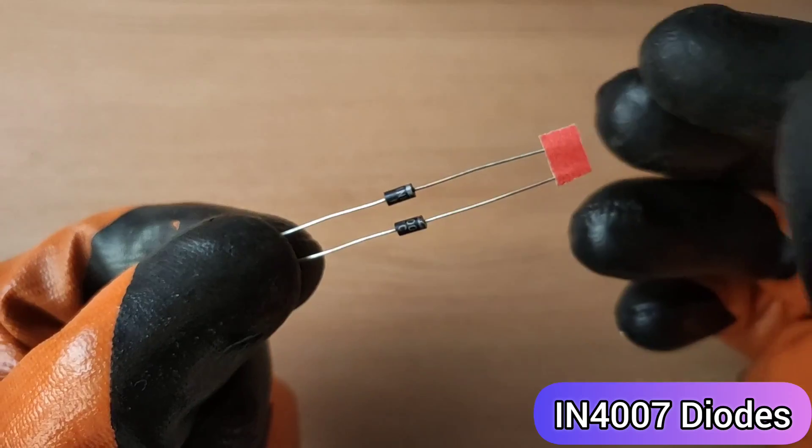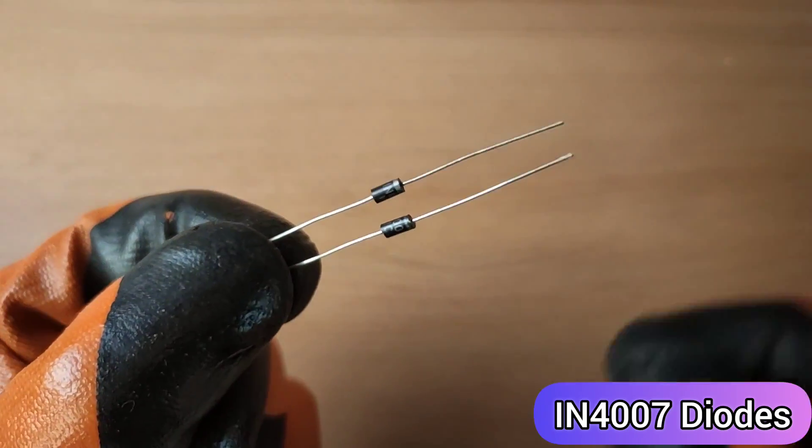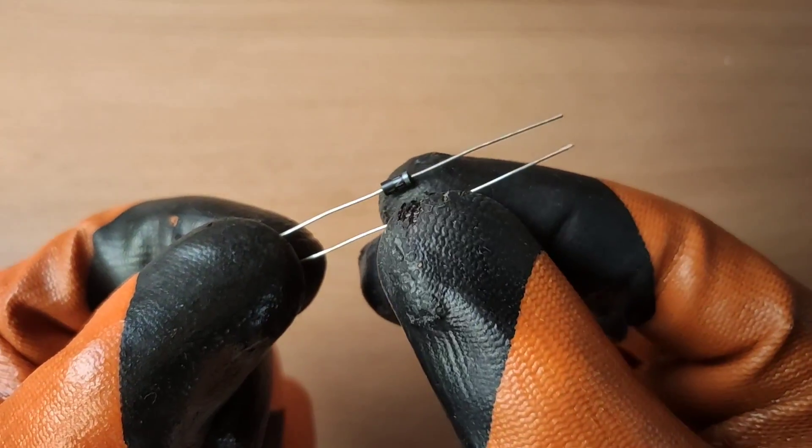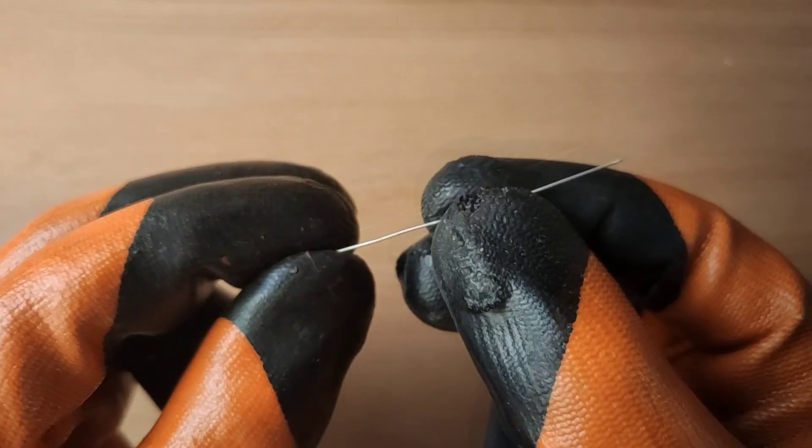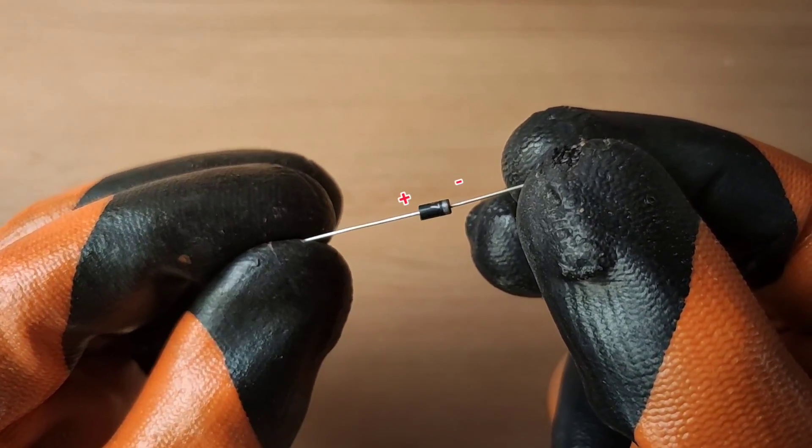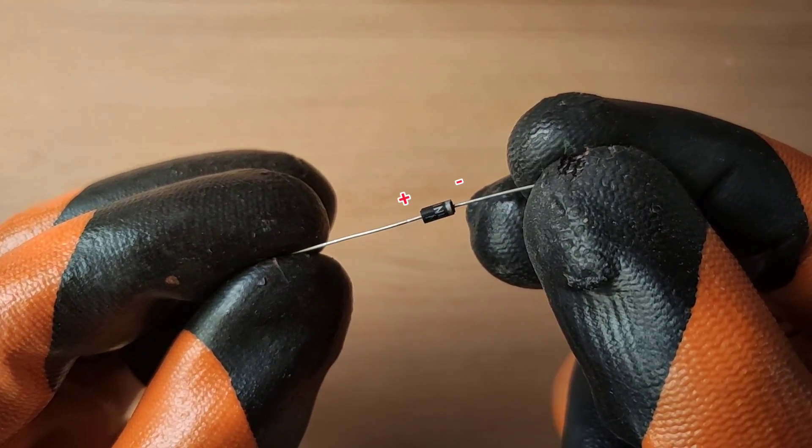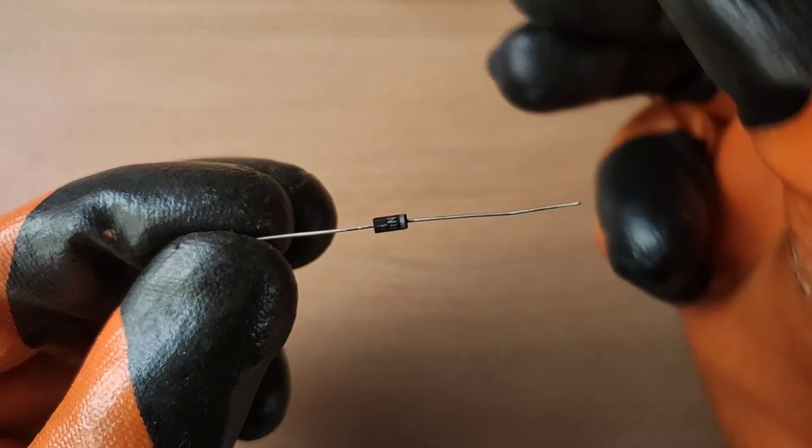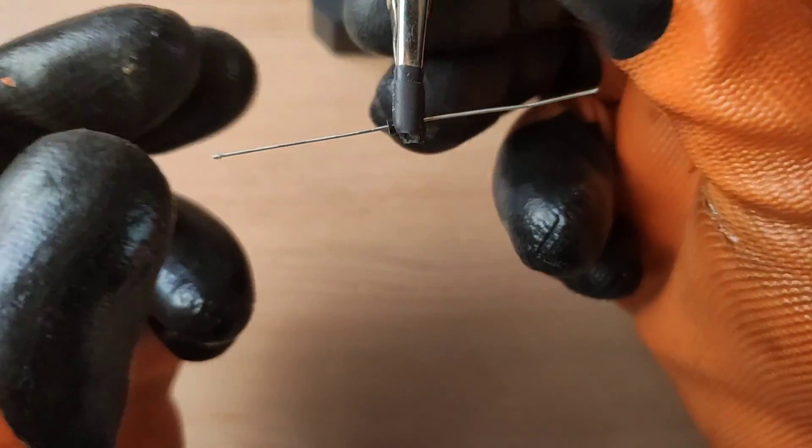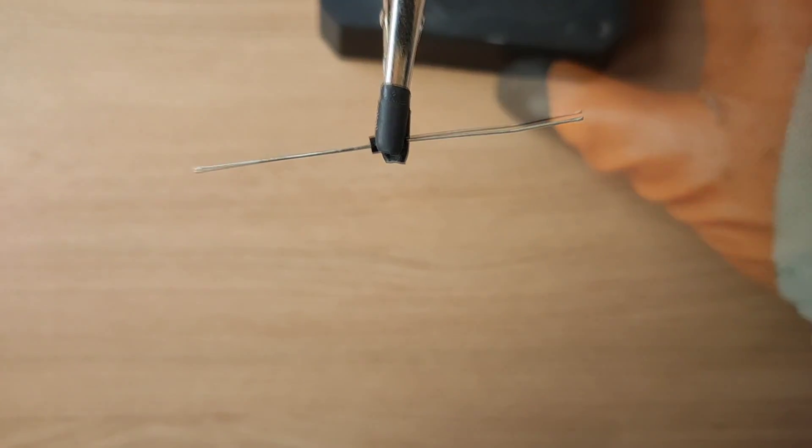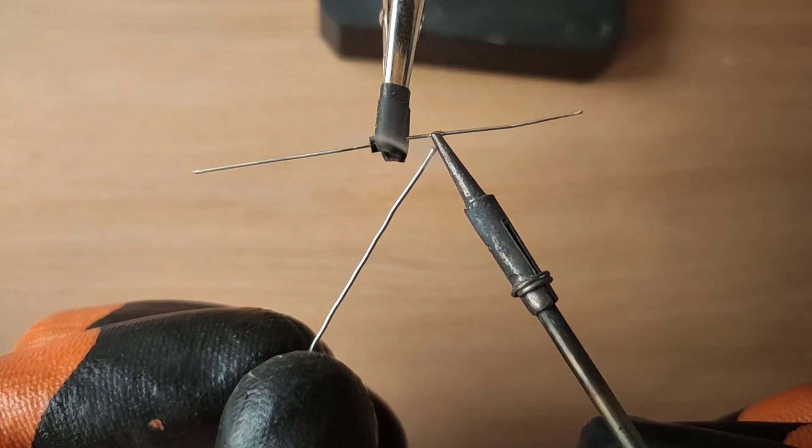For that, first we need 1N4007 rectifier diodes. Plus as anode and minus as cathode. Apply a little solder on leads of diode.